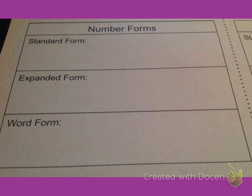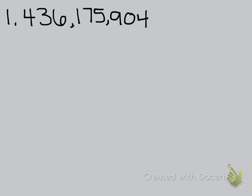The second number form is expanded form. Expanded form is a way to write a number showing the value of each digit. We're going to learn two ways to do expanded form. The first way uses multiplication and parentheses. So here we have our number again, 1,436,175,904. Since the 1 is in the billions place, that means that we have 1 times 1 billion.